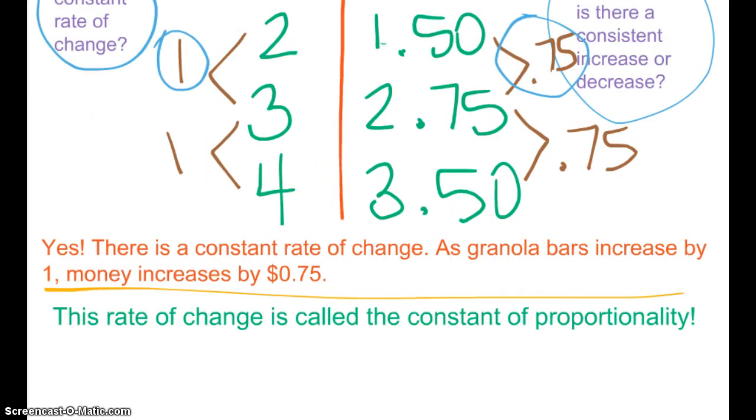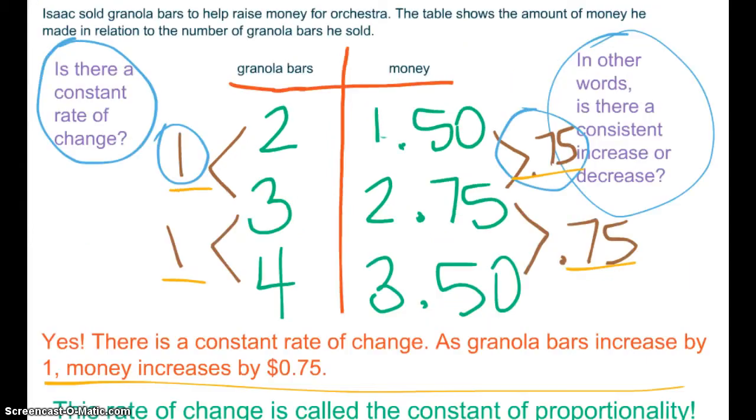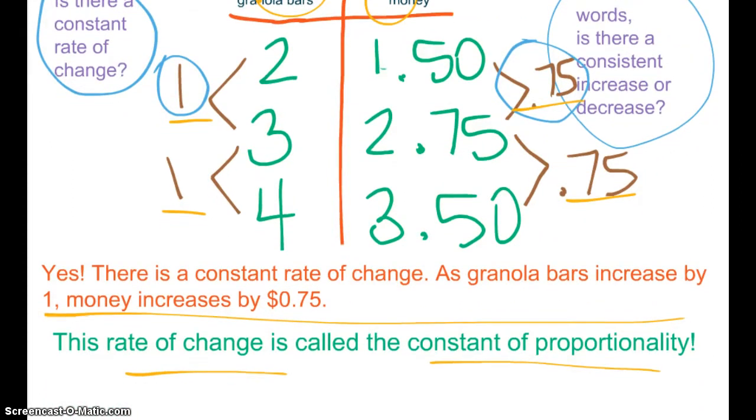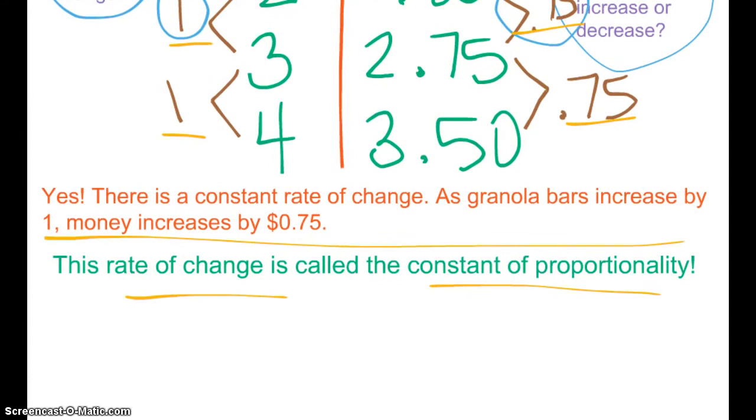Now, I want you to write down that this rate of change is called the constant of proportionality. It stays consistent throughout the whole problem. We have a proportional relationship. As granola bars increase, money also increases proportionally. The money that you make depends on the number of granola bars that you sell. So, the rate of change in this situation is the constant of proportionality.